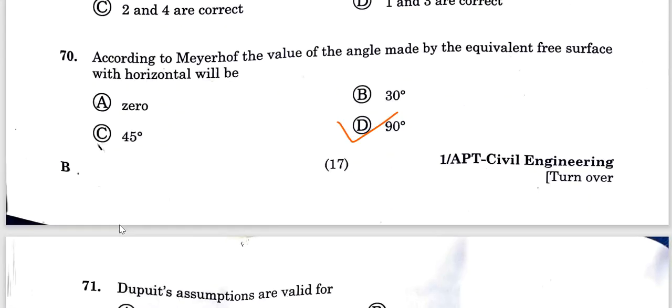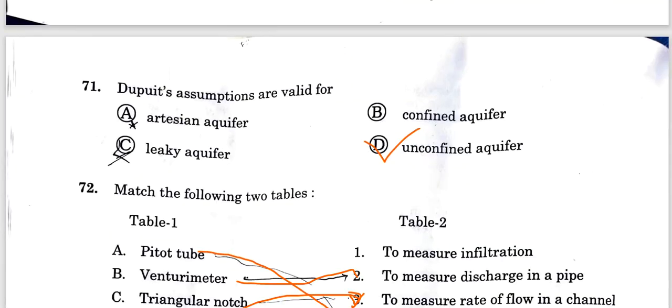Question 72: The value of angle made by the equivalent free surface with horizontal. The answer is 90 degrees. The angle made by equivalent free surface is always perpendicular with horizontal as per Meyerhoff's recommendations. Option D is the correct answer.